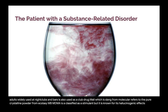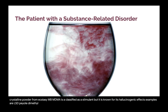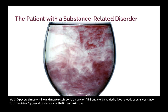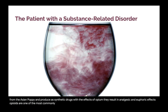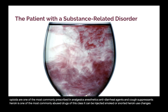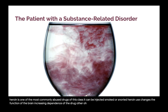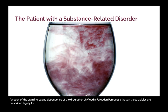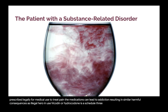Opioids and morphine derivatives: narcotic substances made from the Asian poppy and produced as synthetic drugs with the effects of opium, resulting in analgesic and euphoric effects. Opioids are among the most commonly prescribed analgesics, anesthetics, antidiarrheal agents, and cough suppressants. Heroin is one of the most commonly abused drugs of this class; it can be injected, smoked, or snorted, and its use changes the function of the brain, increasing dependence. Other opioid drugs include morphine, Vicodin, Percodan, and Percocet. Although these opioids are prescribed legally to treat pain, they can lead to addiction with similarly harmful consequences as illegal heroin use. Vicodin (hydrocodone) is a Schedule 3 drug — an analgesic and pain reliever with a high risk for addiction and dependence.